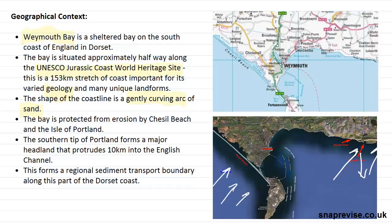One other important factor is that the southern tip of Portland island forms a major headland that projects 10 kilometres into the English Channel. This forms a regional sediment transport boundary at this point here, and as we've learnt in earlier videos about sediment cells, this is the border between two sediment cells that we can see on either side.